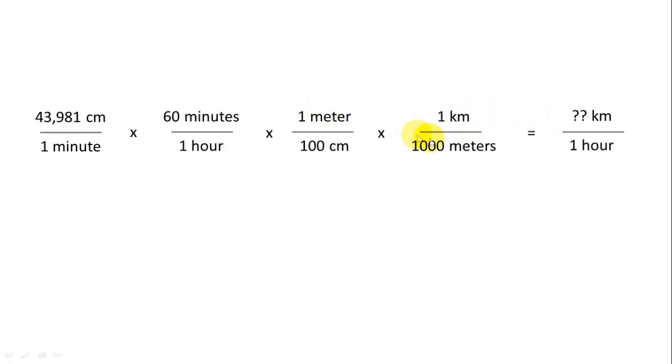So in the end, all of these units are going to cancel out meters, centimeters, minutes, and I'm going to be left with kilometers per hour. So I'll multiply all this out and simplify, and we get 26.4 kilometers per hour.